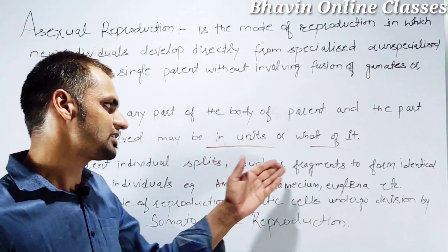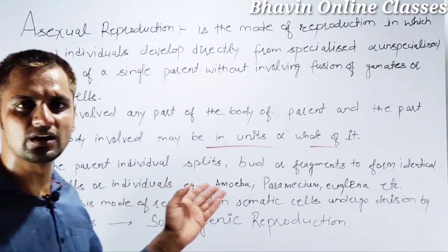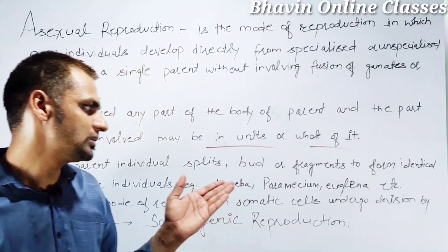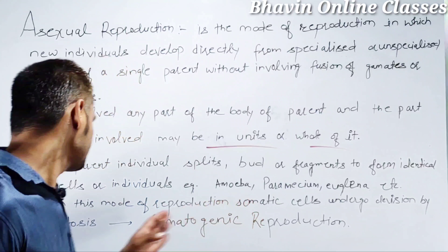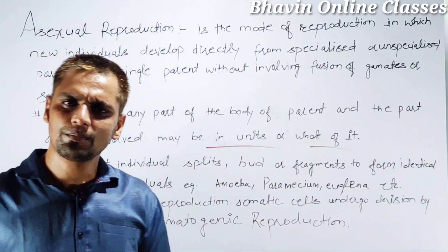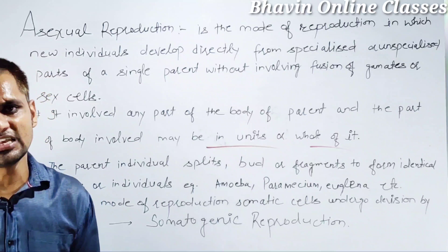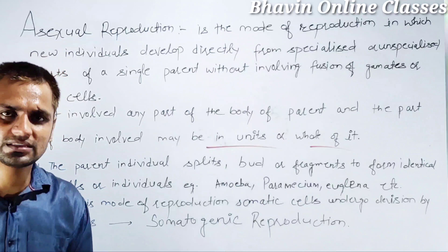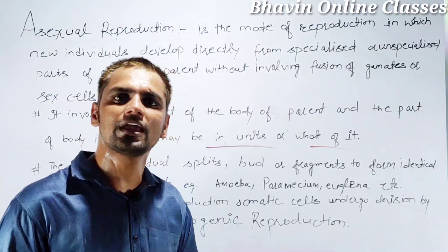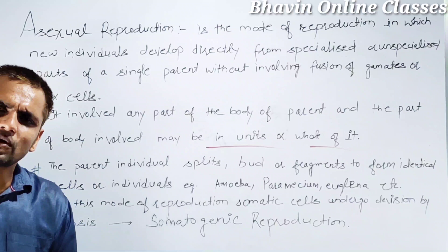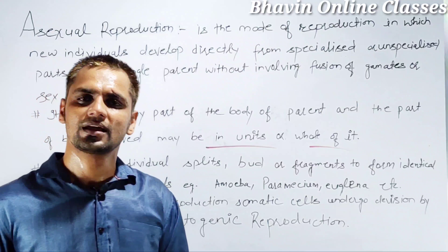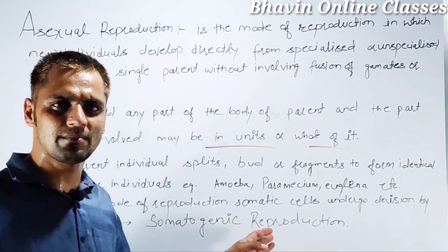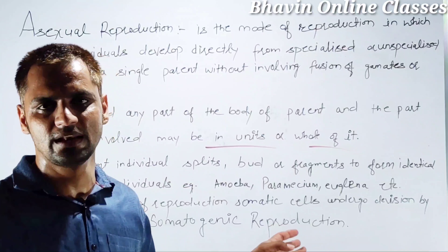The parent individual divides and fragments to form identical cells or individuals — for example, Amoeba, Spirogyra, etc. In asexual reproduction, somatic cells undergo mitotic division. Asexual reproduction is also called somatogenic reproduction, agamogenesis, and apomixis.